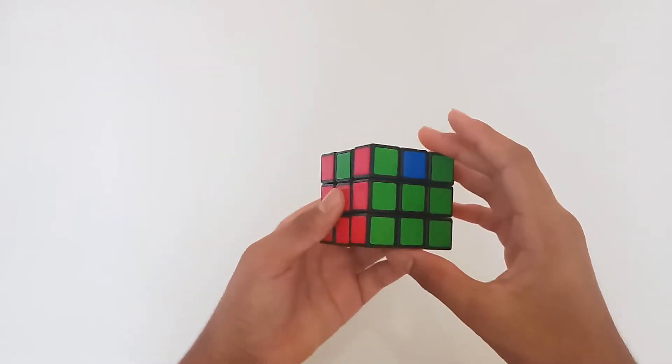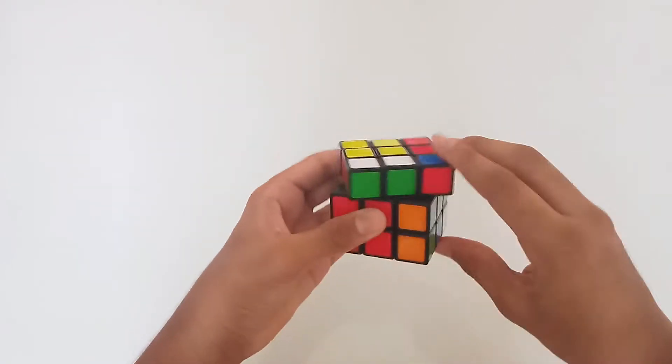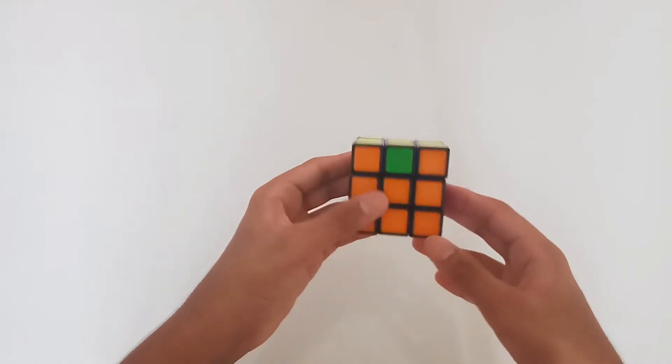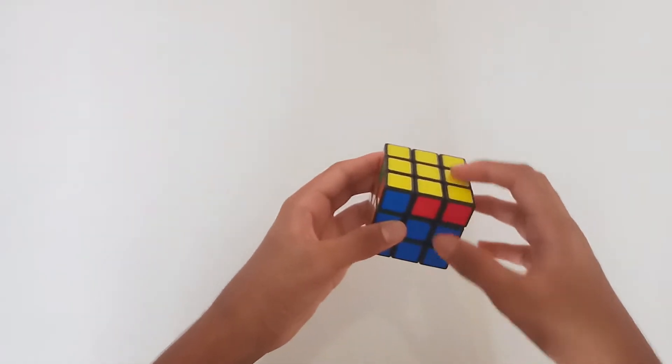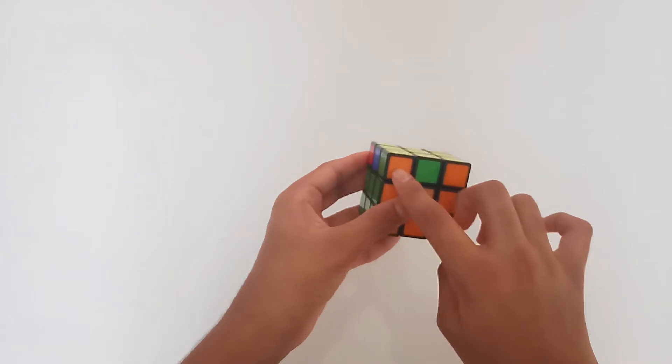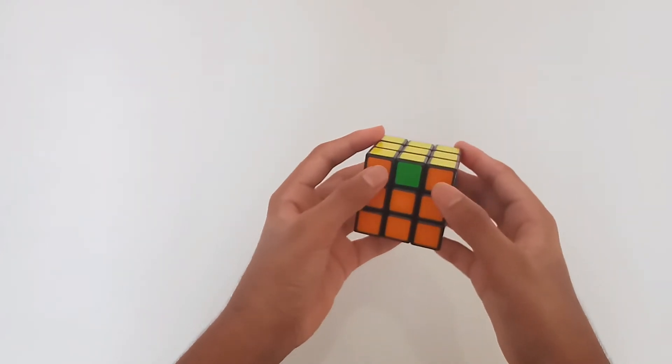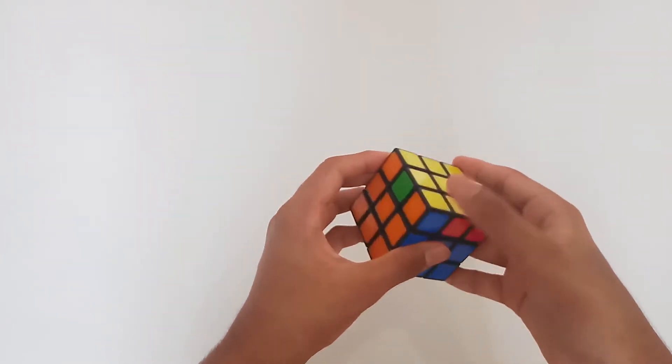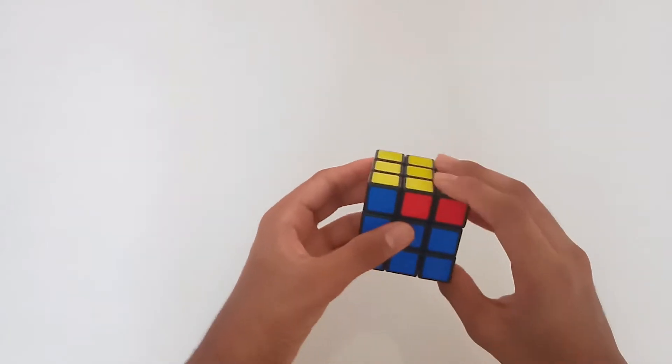This PLL is used to swap adjacent corners. When you have cases like this where this piece and this piece are the same color, you keep that face on the left and then you do this algorithm and all the corners are solved.